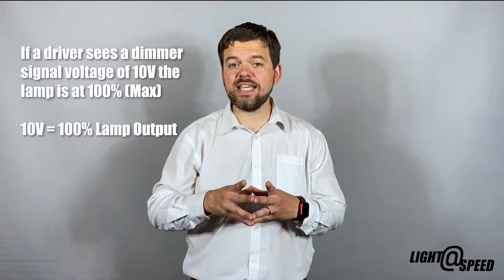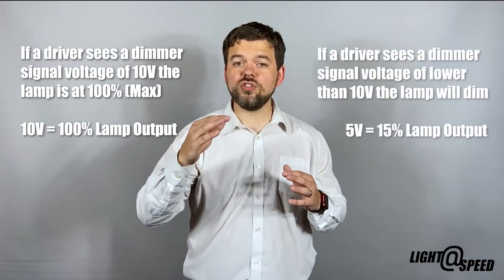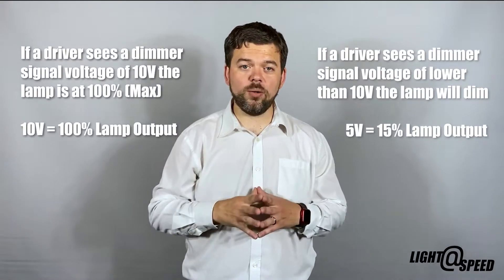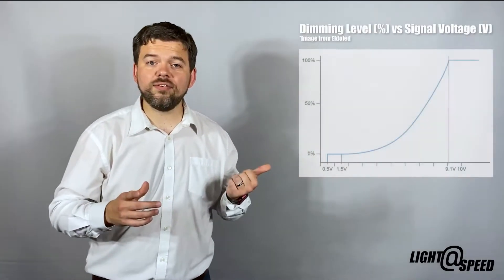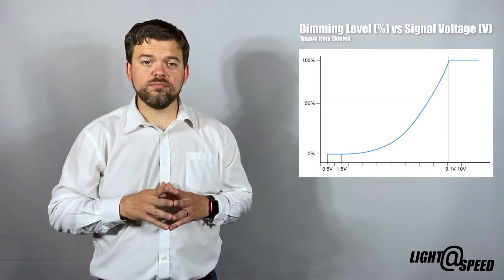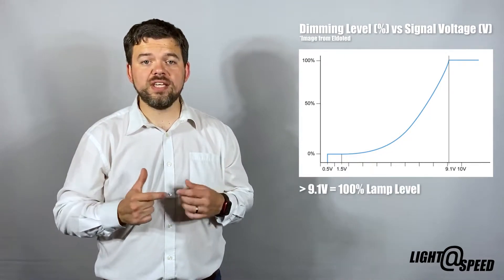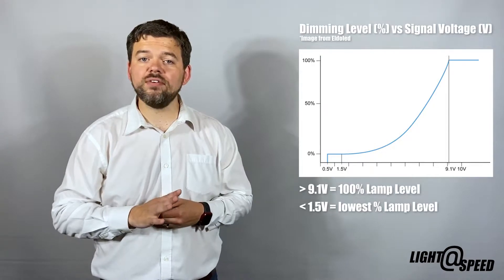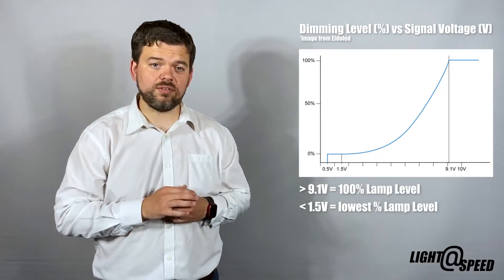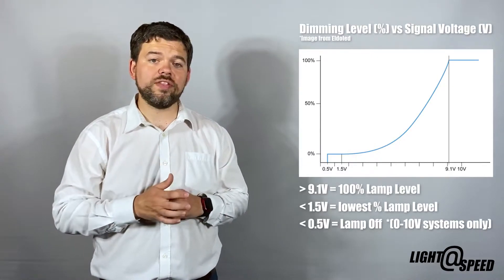When a driver or power supply sees 10 volts the lamp output will be 100%, and if it sees a voltage that's lower the output will be lower. Looking at a graph showing dimming level as a percentage against signal voltage level, any voltage above 9.1 volts causes the lamp to output 100%, and anything below 1.5 volts causes the lamp to be at its lowest level. For 0 to 10 volt systems, anything below 0.5 volts will turn the lamp off.